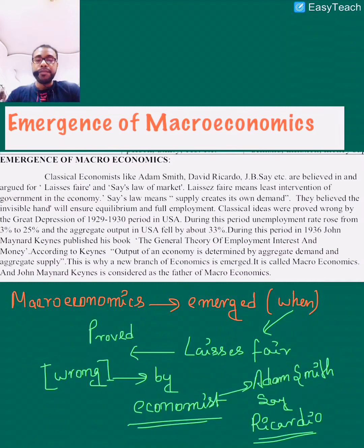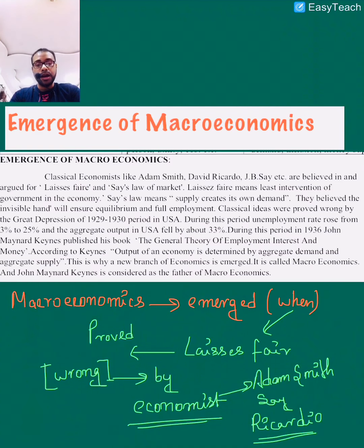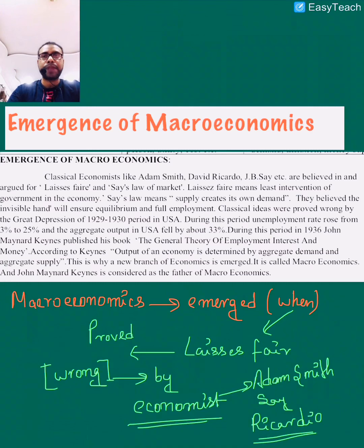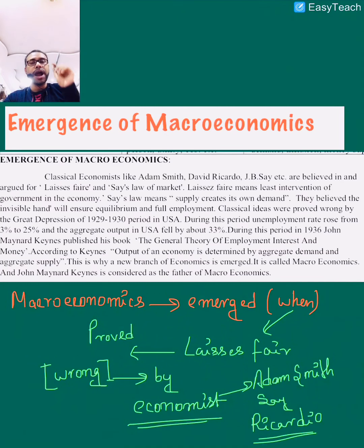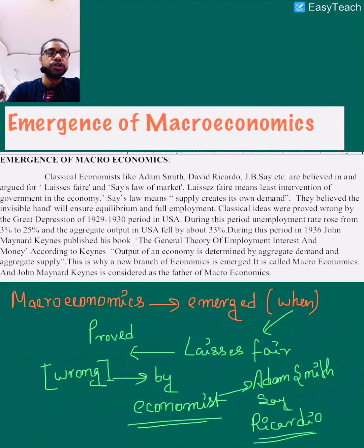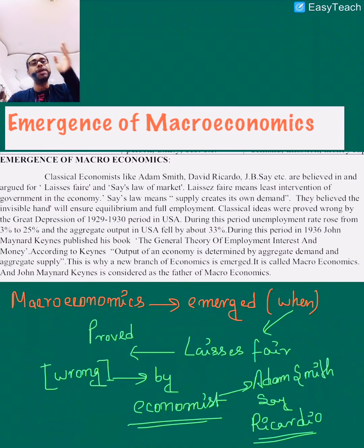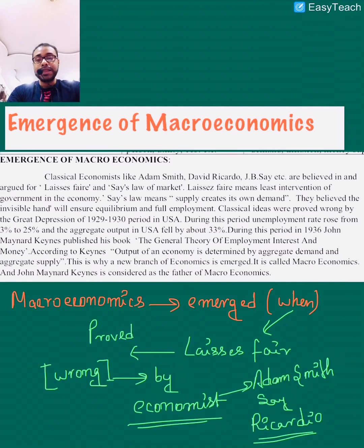Macroeconomics emerged when the laissez-faire approach — given by classical economists like Adam Smith and Ricardo — was challenged. The statement of laissez-faire is: supply creates its own demand, meaning if you have a particular supply then there will be demand. For example, if I continuously raise demand for this pen, shopkeepers will inquire with the company for that model, so supply will inflate in the market. That is the laissez-faire approach, but it was proved wrong.